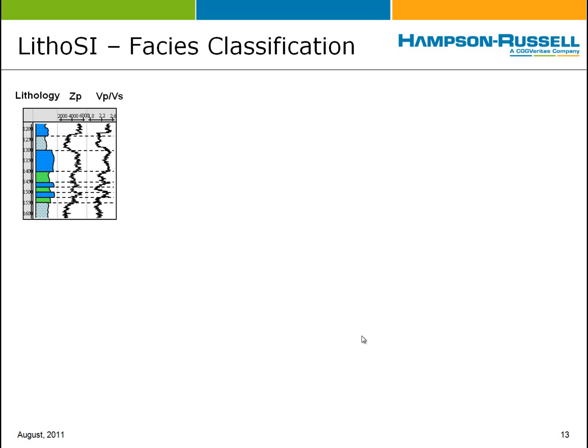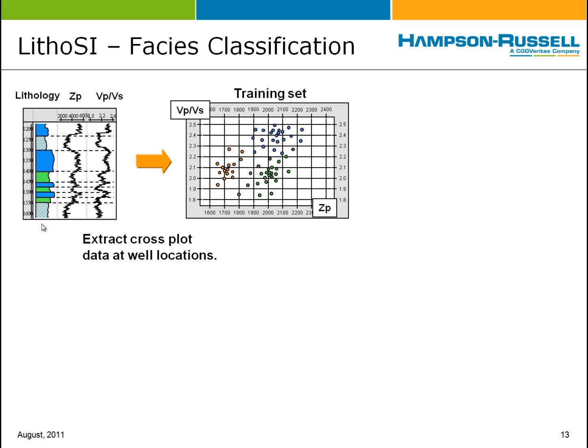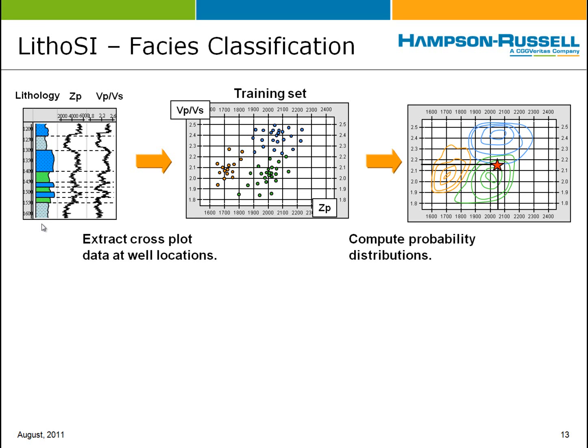Litho-SI is the program that does facies classification. For that process, we need a series of well log curves — for example, in each well, curves corresponding to the inversion outputs we are analyzing, such as P impedance and VP/VS ratio. In addition, we require what's called a lithology log — a number-coded log which identifies zones within the curves themselves, typically created by a petrophysicist familiar with the area. From the well log data, we extract training data, which is basically a cross-plot color-coded by lithology. From that extracted data, we calculate probability distributions. Those distributions, if well separated, indicate a high ability to separate the two classes. Where they overlap, it shows non-uniqueness or difficulty, which is helped by the mathematical process.